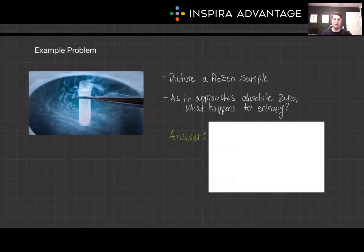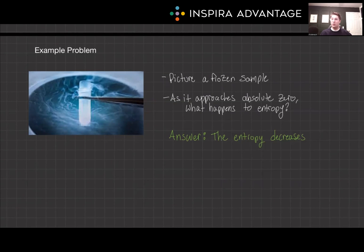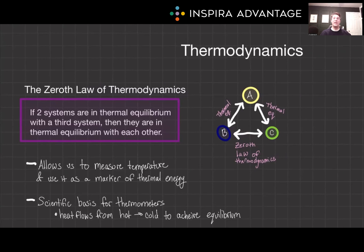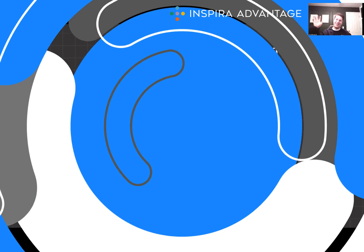One more entropy question: picture a frozen sample in cryogenic storage. As it approaches absolute zero, what happens to its entropy? The entropy decreases, reaching its minimum at absolute zero, aligning with the third law of thermodynamics. And there you have it — the four cardinal laws of thermodynamics, each playing a crucial role in our understanding of the physical and biological world. Keep these principles in mind as you continue your MCAT prep and beyond into your medical careers. Thank you for watching, and I will see you next time.